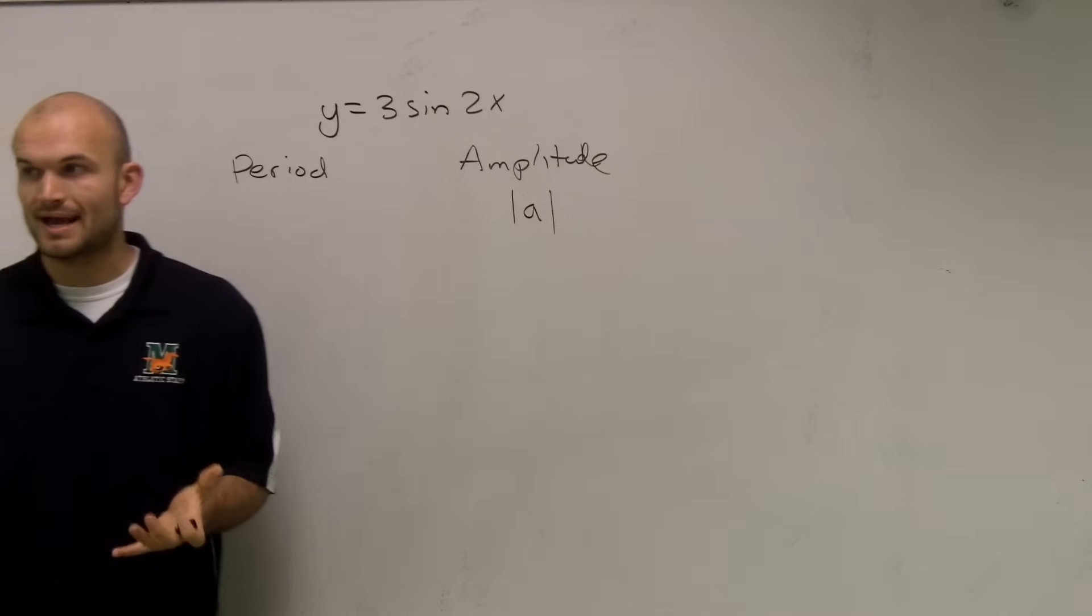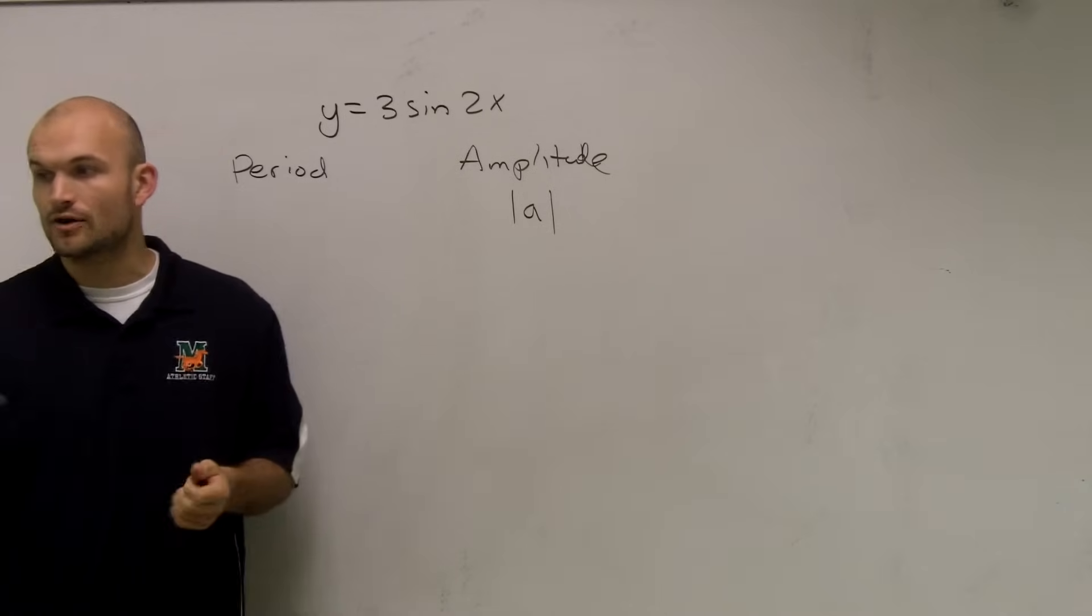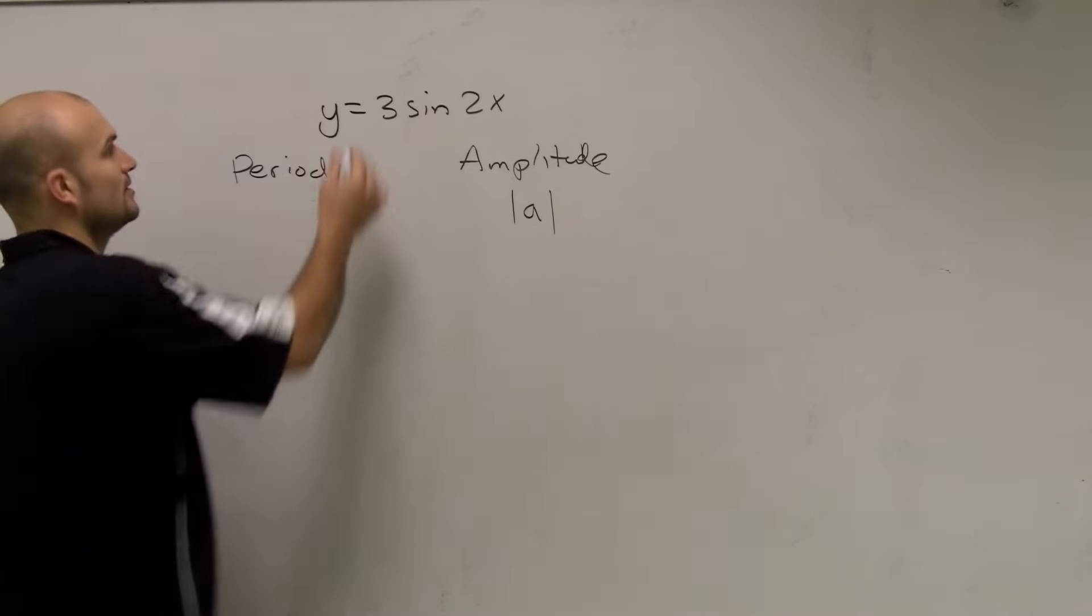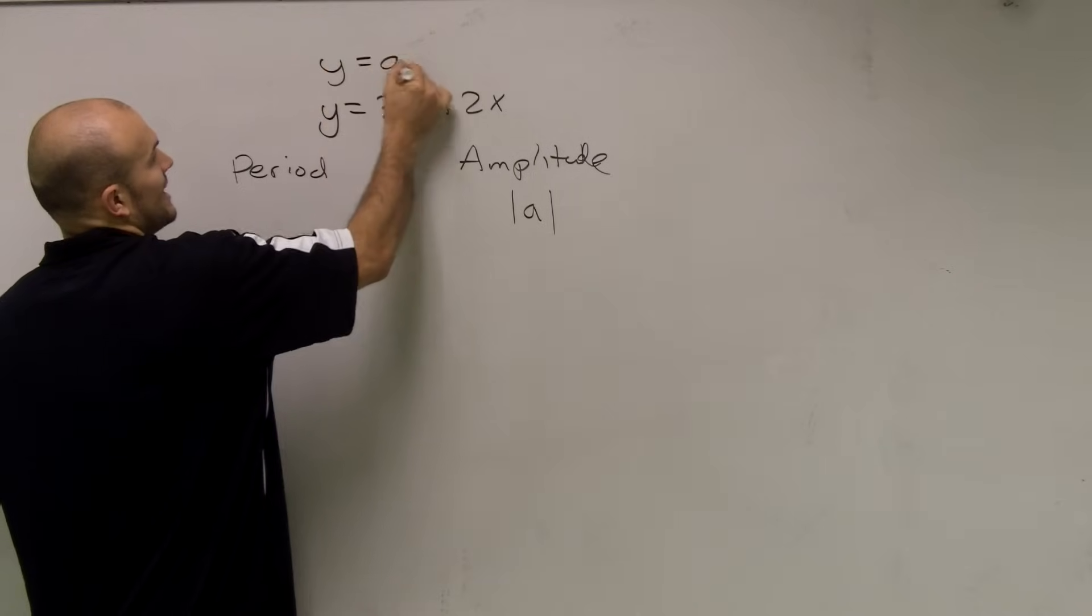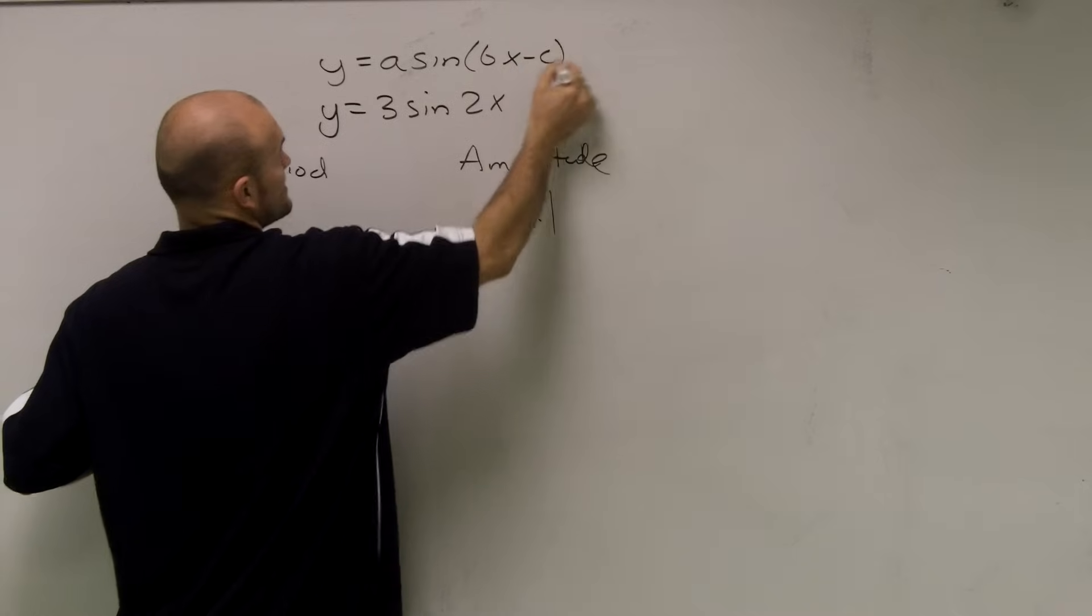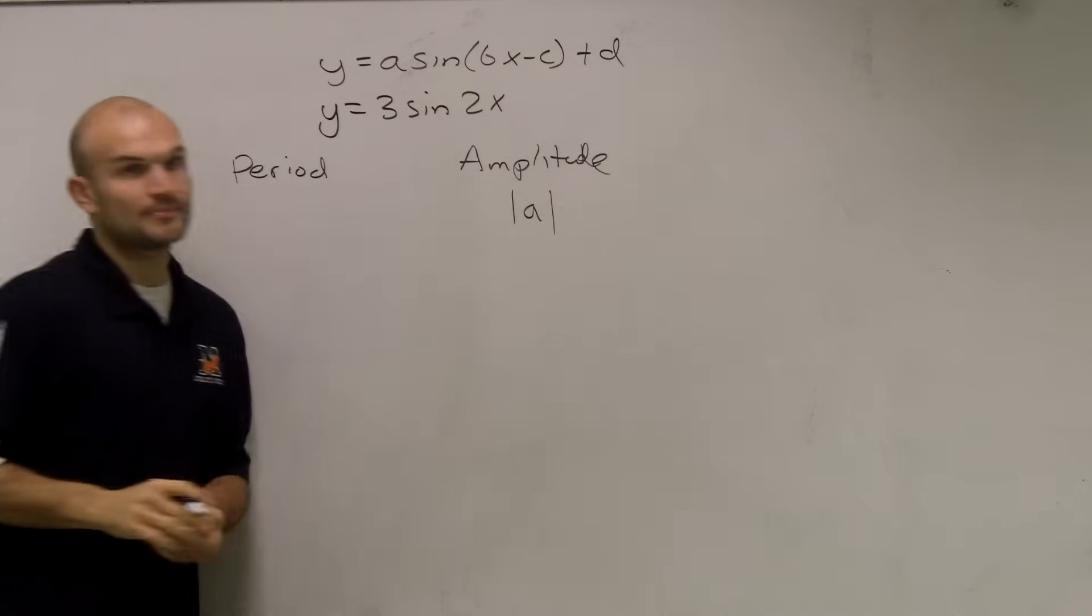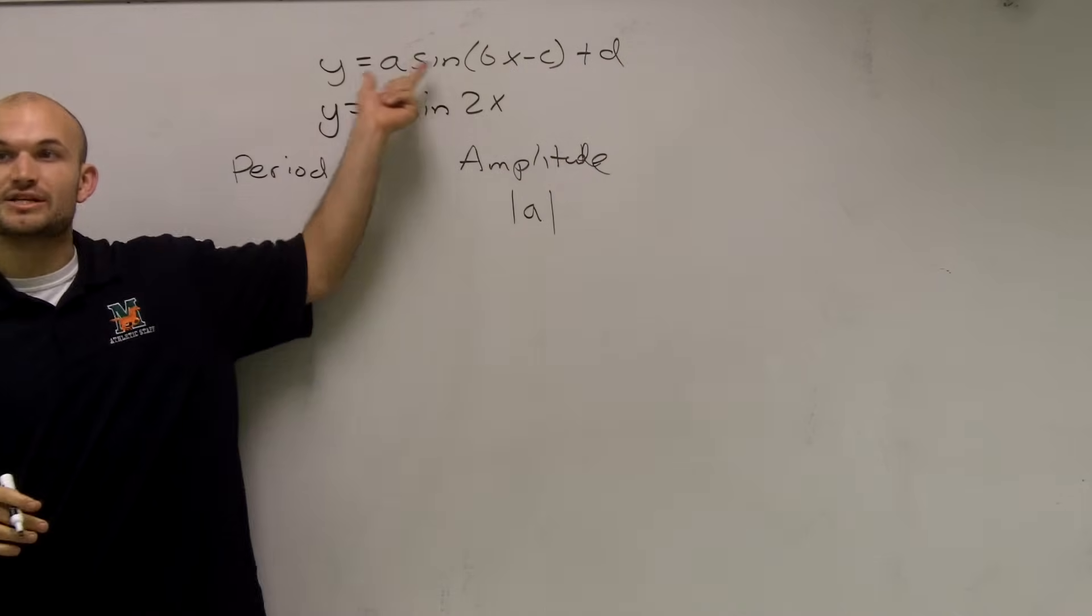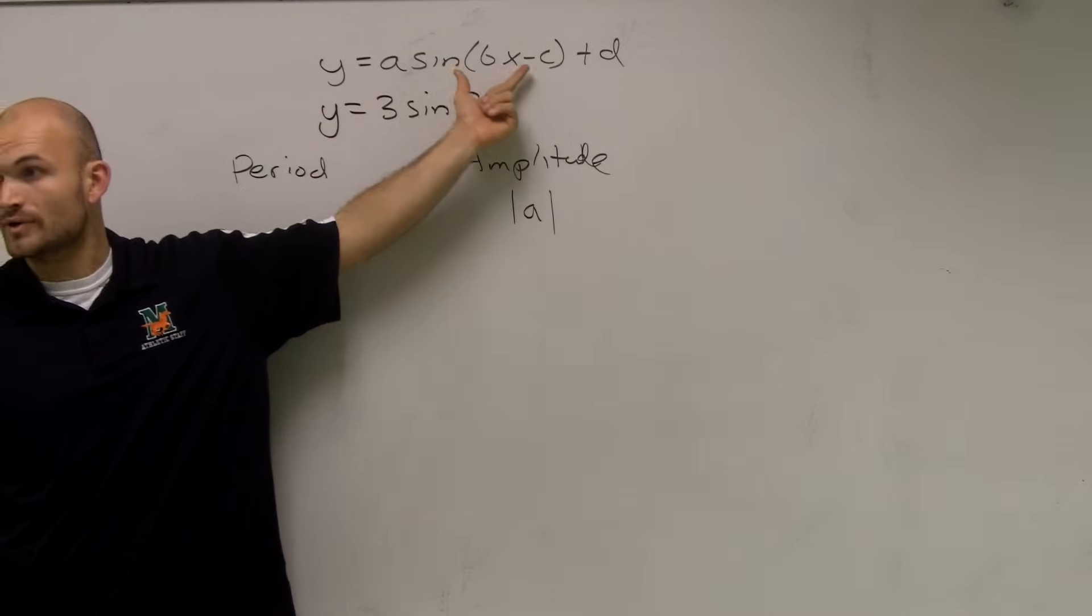All right, now, if we don't know what A is, we need to go back and think. The general form of the function, which is in your book, says A times sine of Bx minus C plus D. Where each one of these numbers, each one of these coefficients are all integers, all real numbers.